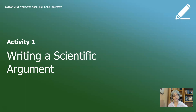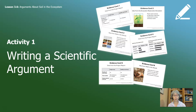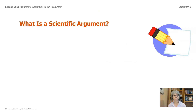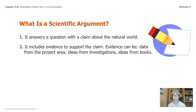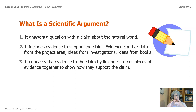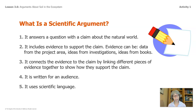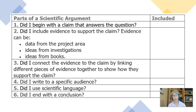In our last lesson, you used these evidence cards to get your thoughts together around answering why decomposers are important. A scientific argument answers a question with a claim about the natural world. It includes evidence to support the claim — evidence can be data from the project area, ideas from investigations, and ideas from books. It connects that evidence to the claim by linking different pieces of evidence together to show how they support the claim. It is written for an audience, uses scientific language, and ends with a conclusion. You don't have to remember all of these points because in your packet and in this video there is a checklist you can use while you write your argument.